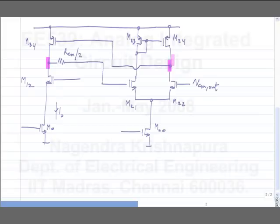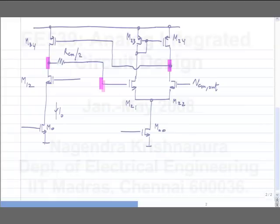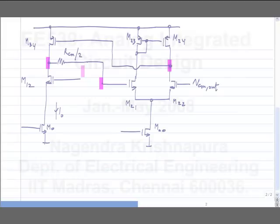Just in the feedback loop, the gate of M21 is another node. If RCM/2 is very small, this node and that node are tightly coupled. But the value we want for RCM is very large, so that it does not load the differential pair. Depending on the value of RCM, there are two poles here that can both be at low frequencies. So there are three nodes where you can have relatively low-frequency poles.